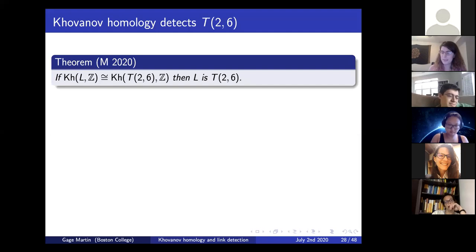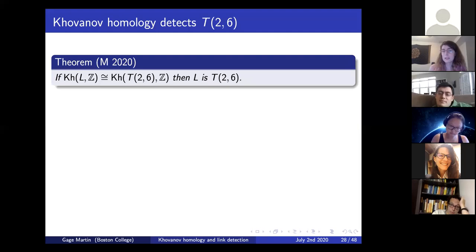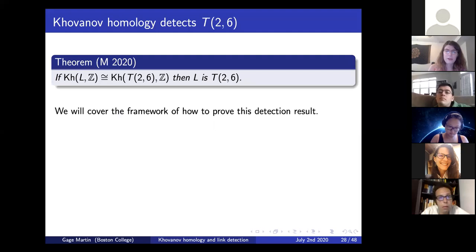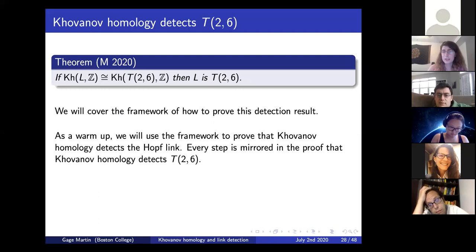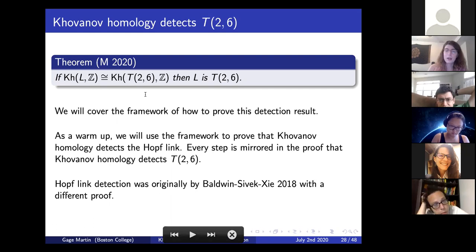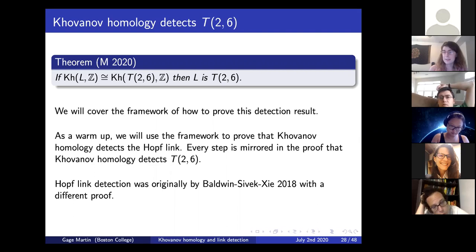Now that we've seen some of these tools, let's see how to put them together to prove a link detection result. We'll look at the example where I showed Khovanov homology detects the torus link T(2,6). As a warm-up, we'll first use the framework to show Khovanov homology detects the Hopf link—it's simpler, but every step will be mirrored in the proof for T(2,6). The Hopf link detection was originally proved by Baldwin, Sivek, and Xie using a different argument, but I'm presenting this one because it extends to T(2,6).